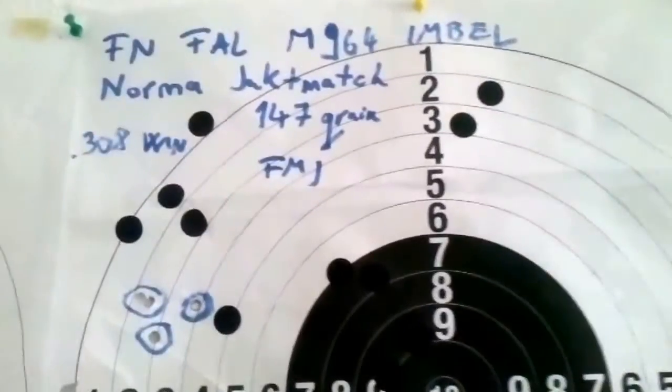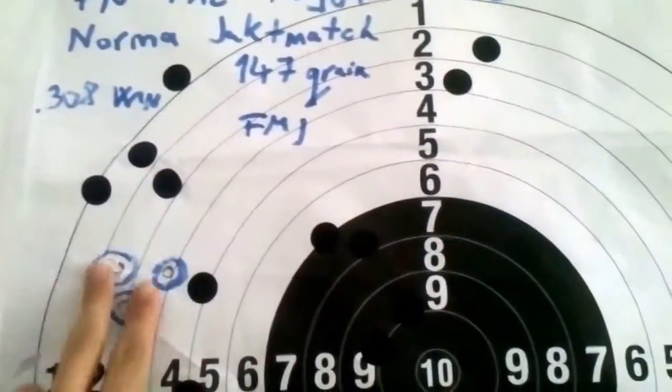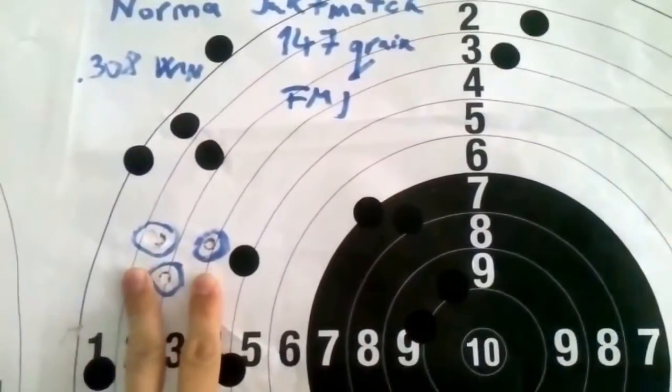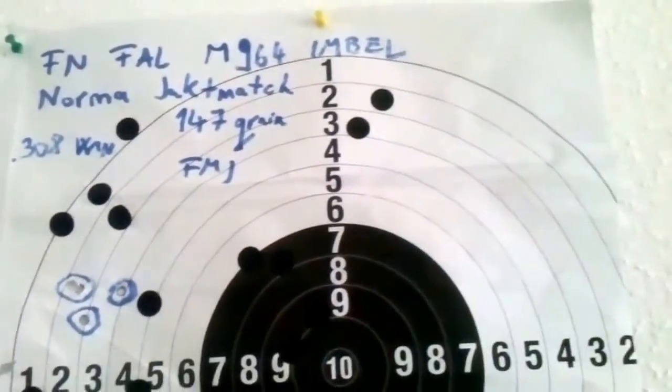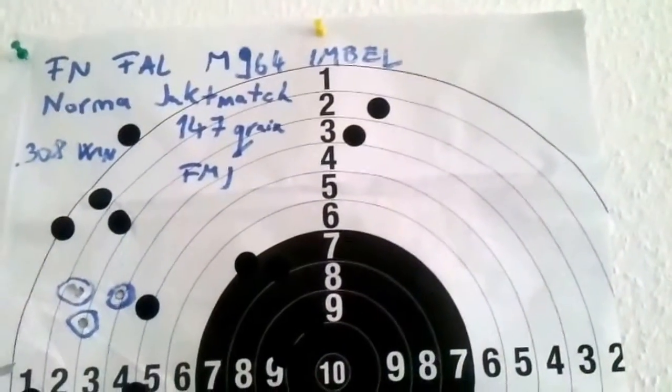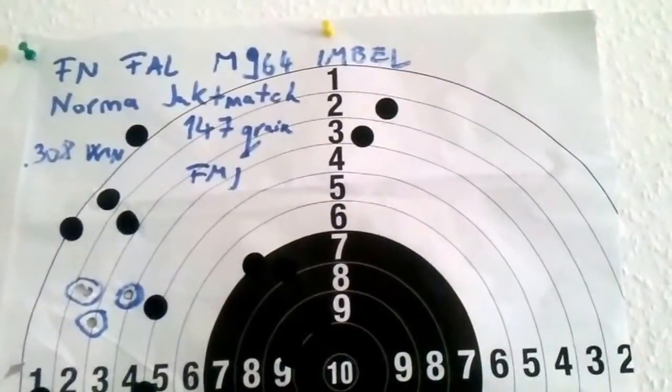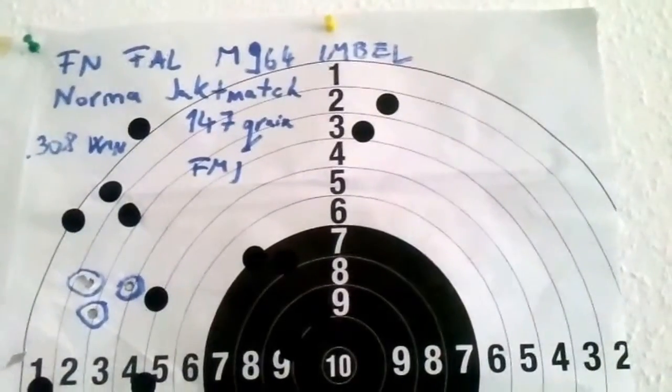FN FAL, normal full metal jacket, that is one and a quarter inch group, 110 yards, 100 meters, with FMJ ammo, so a little bit more than one MOA.